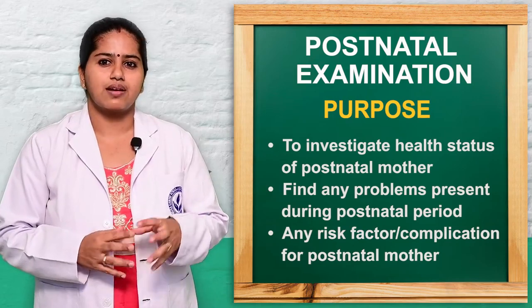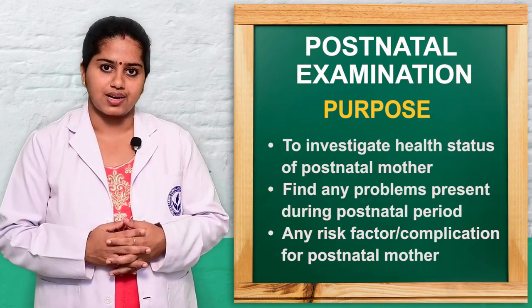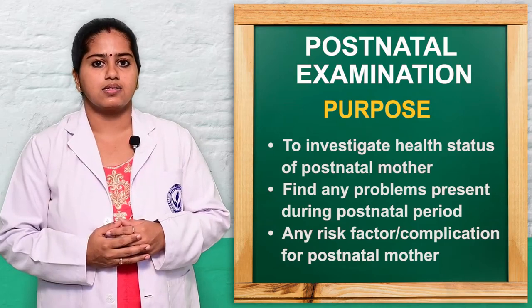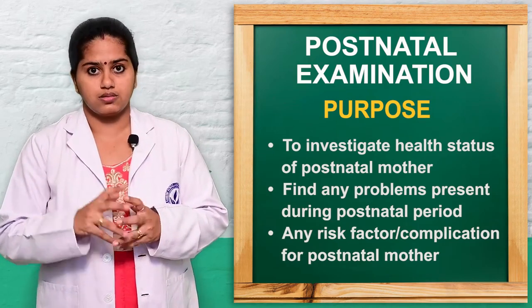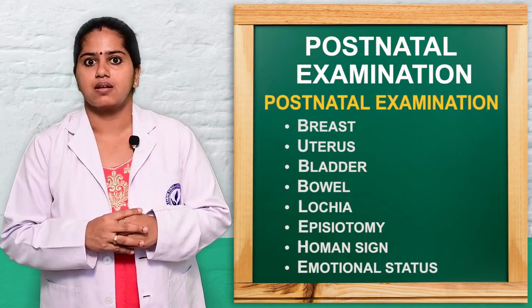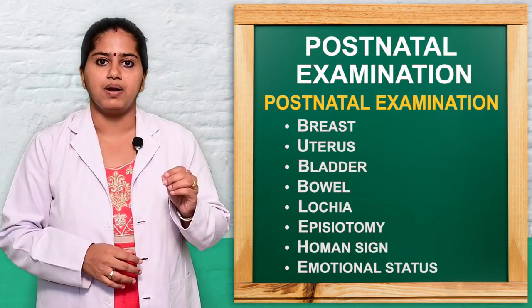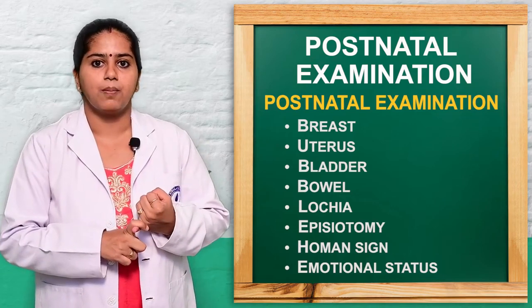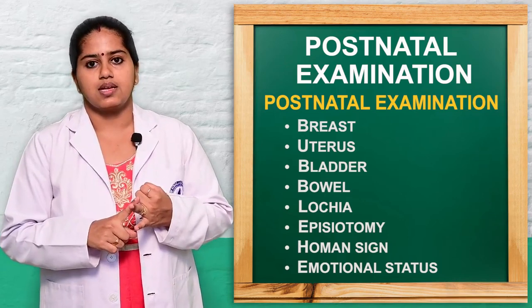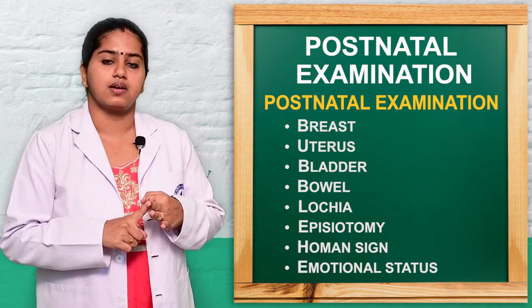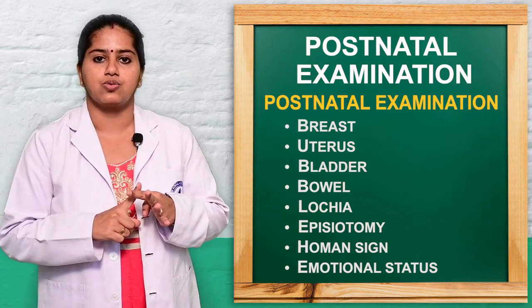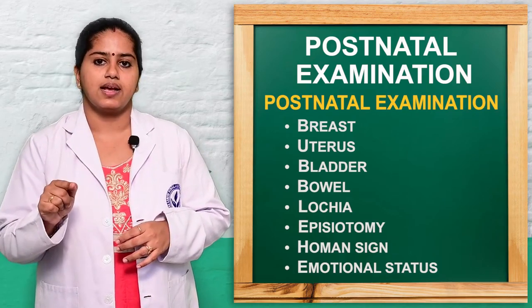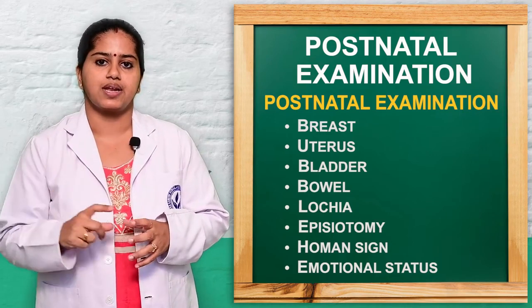In postnatal assessment, there is general assessment, general physical assessment, and head-to-toe assessment. Some specific points we have to remember during the postnatal period can be recalled using the easy method known as BUBBLE HE. B is for breast, U is for uterus, the next B is for bladder, another B is for bowel, L is for lochia, H is for Homans' sign, and E is for emotional status.